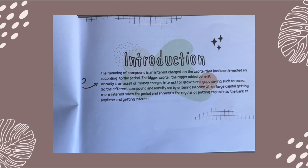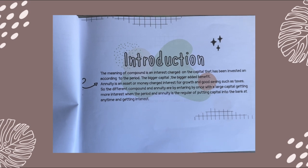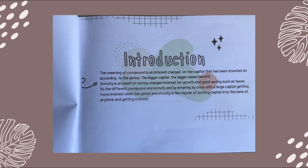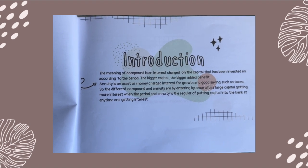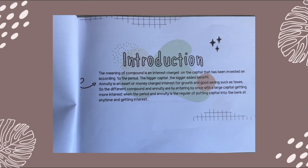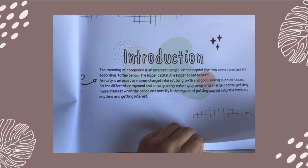Annuity is an asset or money charged interest for growth and good savings such as tax. So the different compound and annuity are by entering by once with a large capital getting more interest when the period and annuity is the regular of putting capital into the bank at any time and getting interest.